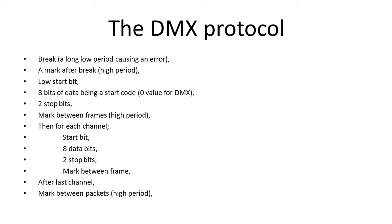For each channel or frame within the packet we have a start bit which is low, eight data bits, and two stop bits which are high, followed by a mark between frames. After the last channel we have the mark between packets, then it's followed by the next break. So DMX isn't too dissimilar from serial — the only thing not in the serial protocol is the break at the beginning.